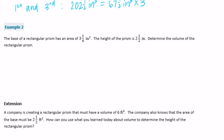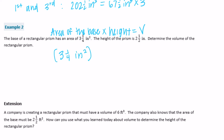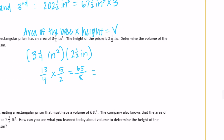Example 2: The base of a rectangular prism has an area of three and one-fourth inches squared. The height is two and a half inches. Determine the volume. We know the area of the base, so we use area of base times height. Three and one-fourth times two and a half — converting to improper fractions: thirteen-fourths times five-halves. Thirteen times five is sixty-five, and four times two is eight, giving sixty-five eighths. Eight times eight is sixty-four, so that's eight with one-eighth left over: eight and one-eighth inches cubed.